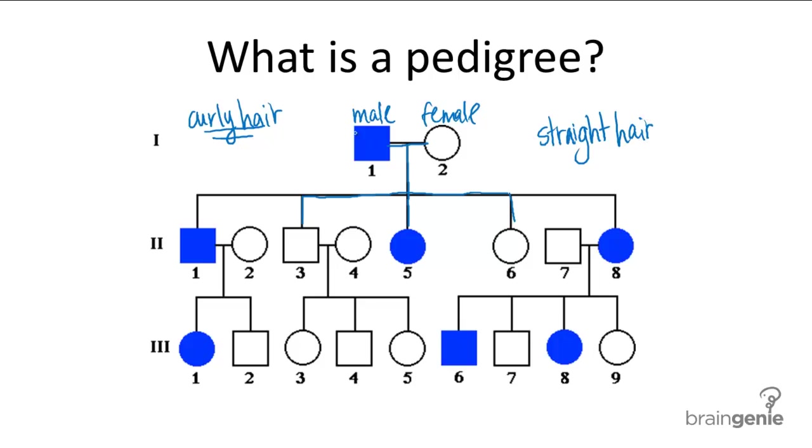To read this pedigree chart goes something like this. In the first generation, the father has curly hair, the mother has straight hair, and then they have five offspring, three of which have curly hair, two of which have straight hair.